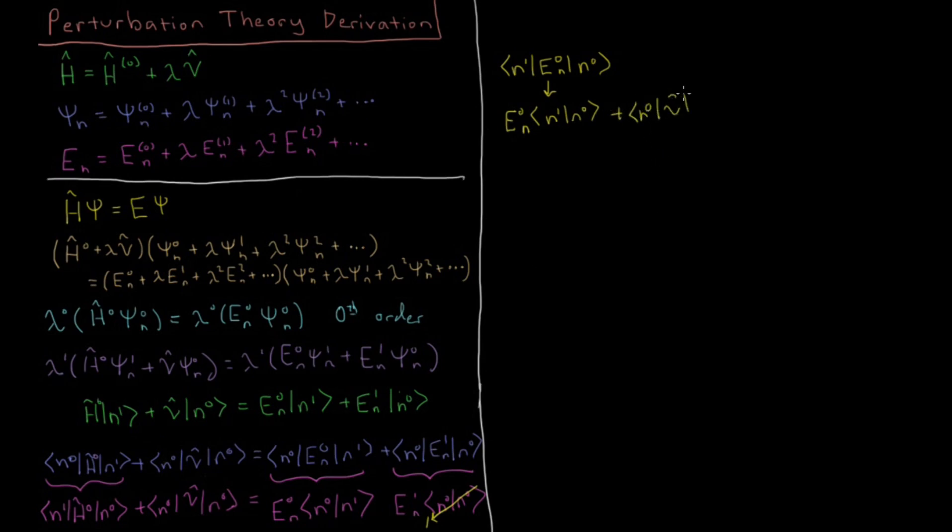Then dragging along everything else, n0, V, n0 equals E0 n, n0, n1, plus because this became 1, we just have E1 n there.